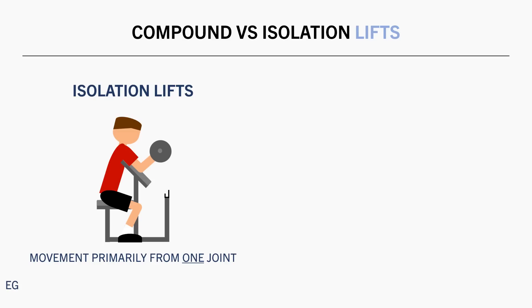Some examples of isolation lifts include bicep curls, lateral raises, leg extensions, and calf raises.